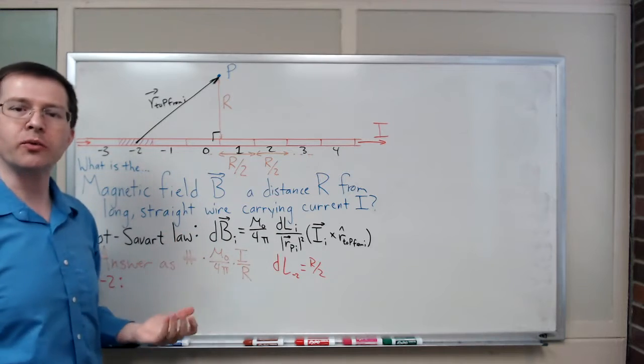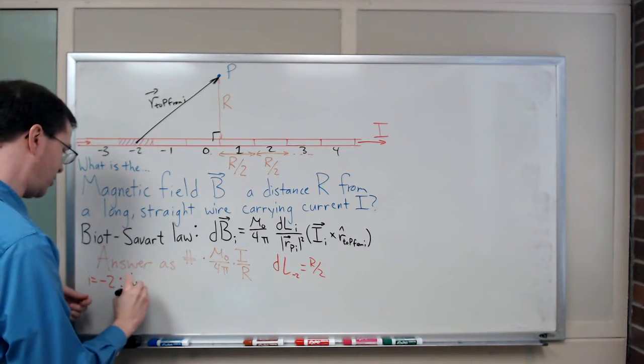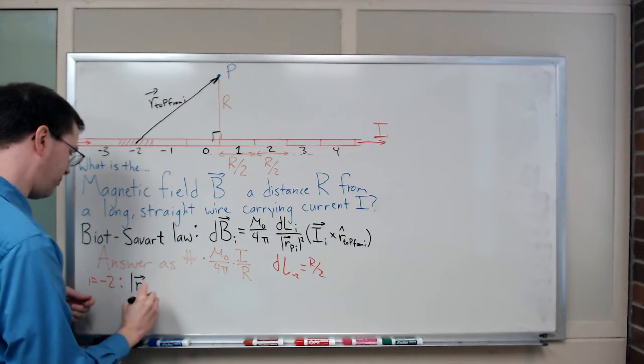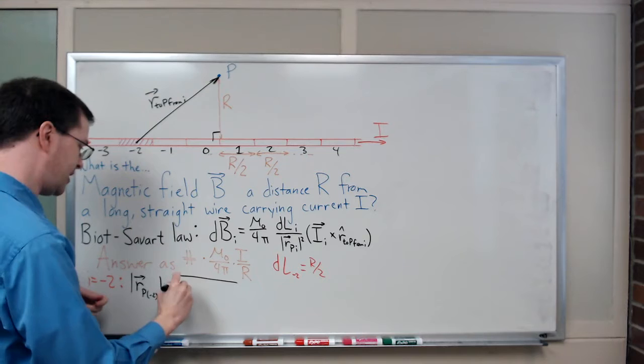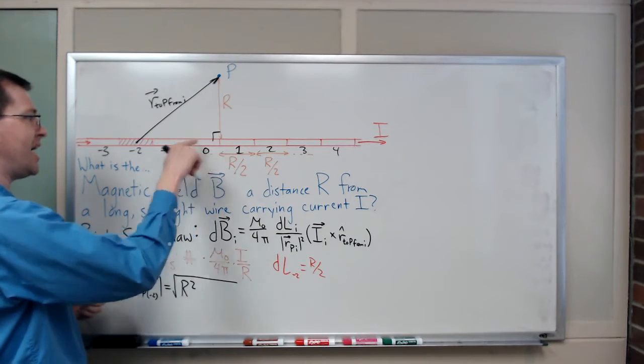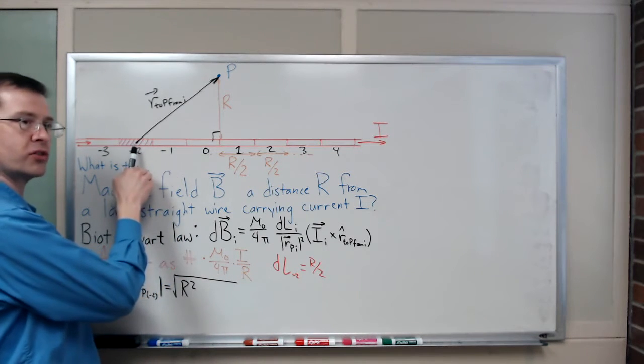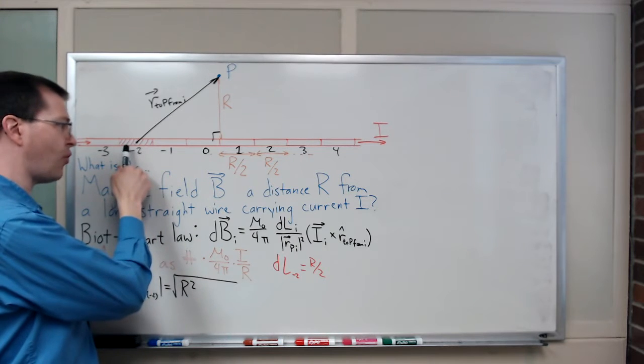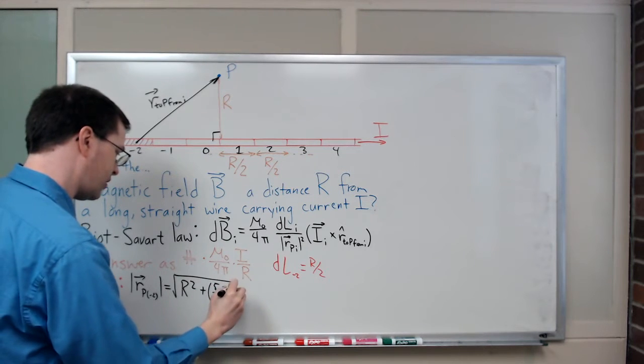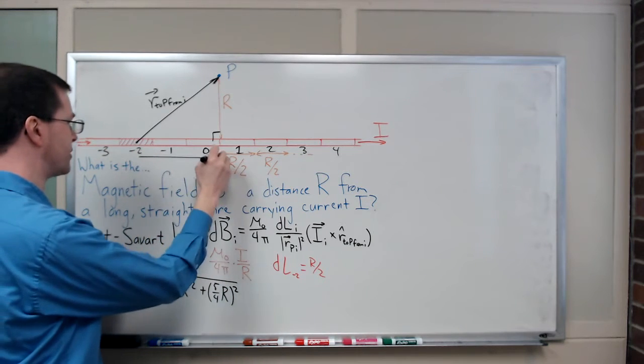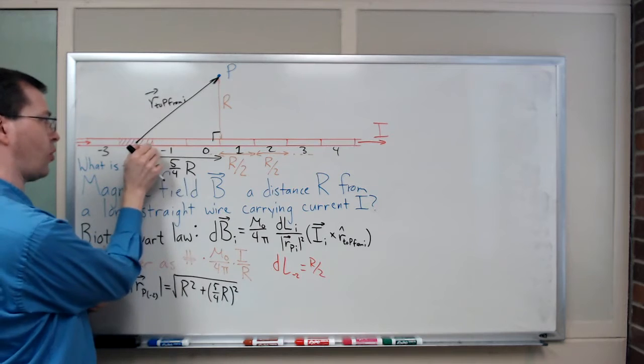I have to figure out what is the length of that vector. This is a right angle by definition, we did that by definition. So I've got a right triangle here. The length of that thing, my magnitude of R to P from point minus 2, is going to be Pythagorean theorem. This side is R squared, that's the vertical side. And this side, each one of these chunks is R over 2. So that's R over 2 plus R over 2 plus half of R over 2, so that's R plus R over 4, that's 5 fourths R squared.